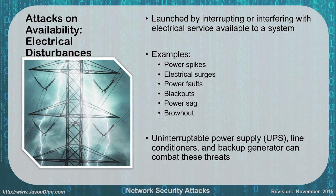Availability attacks from electrical disturbances involve interrupting or interfering with electrical services — power spikes, surges, faults, blackouts, power sags, or brownouts. These are mitigated using uninterruptible power supplies (UPSs), line conditioners to prevent brownouts and power sags, and backup generators that kick on during blackouts to maintain continual power until electricity is restored.